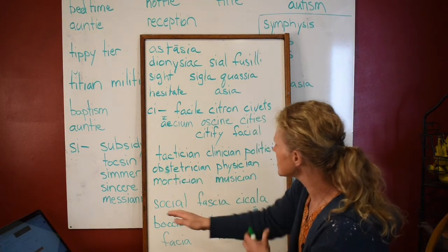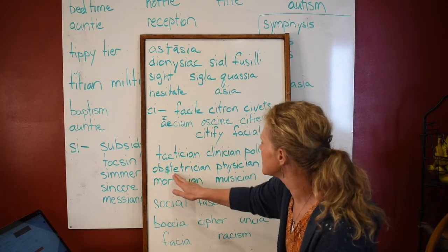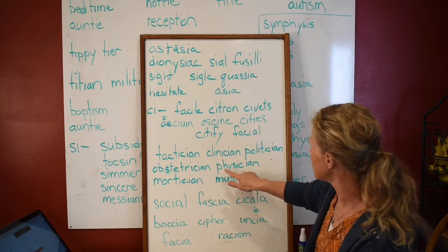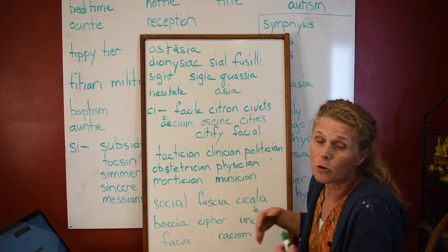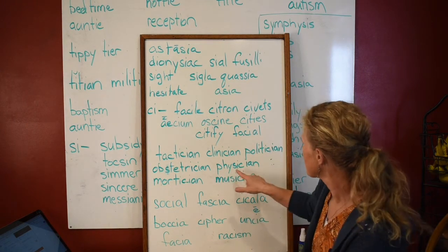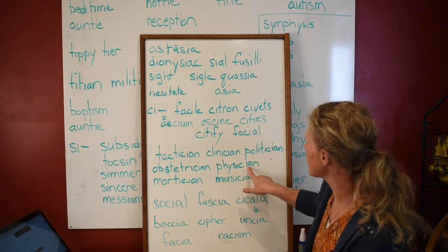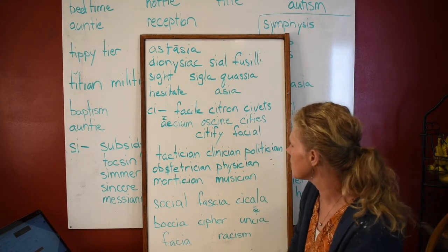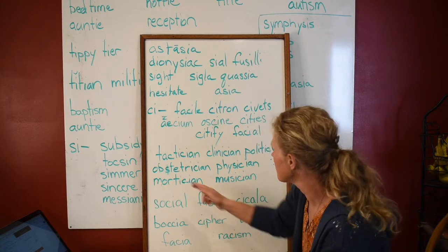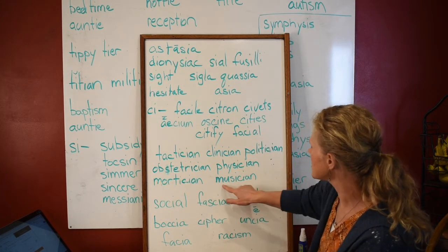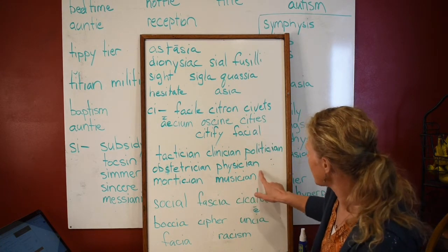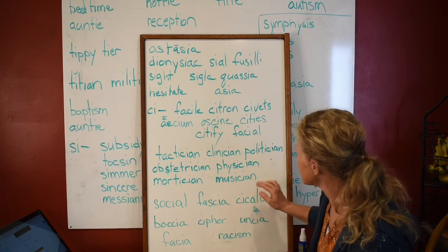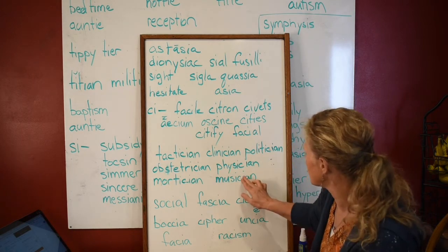'Obstetrician' — somebody who works in obstetrics. 'Physician' — somebody that works with a physical body. If you can spell 'physics,' you can spell 'physician.' This is a Greek word. 'Mortician' — mort means death. 'Musician' — somebody who works in music. See how it's AN. But CI is not always just associated with AN.